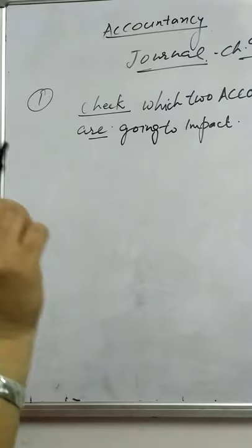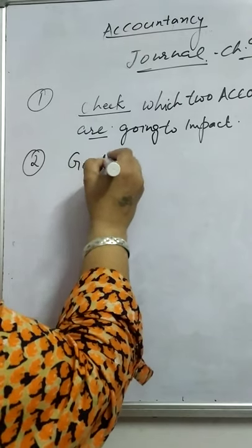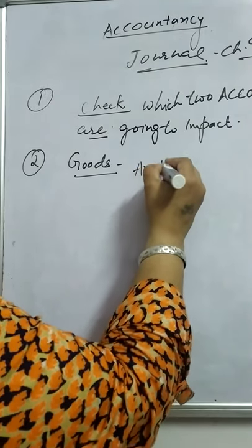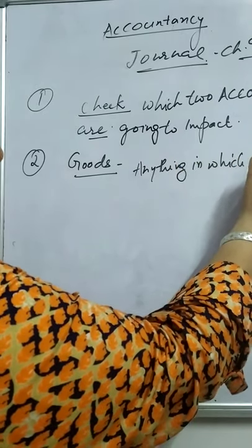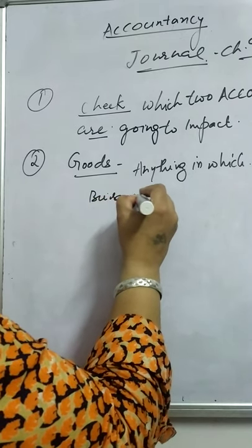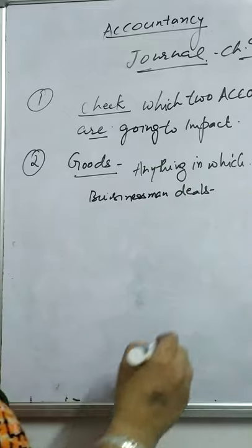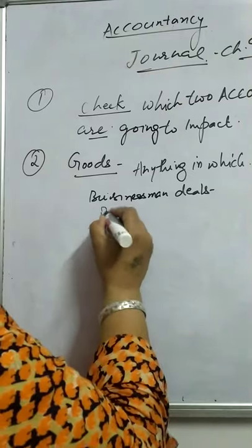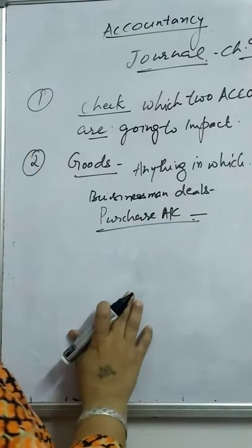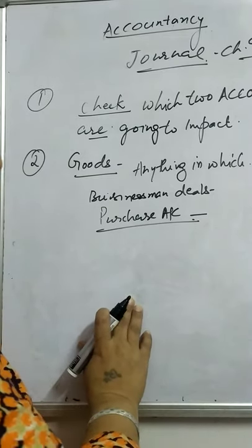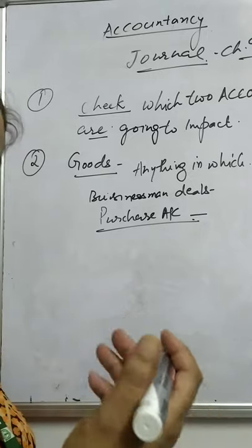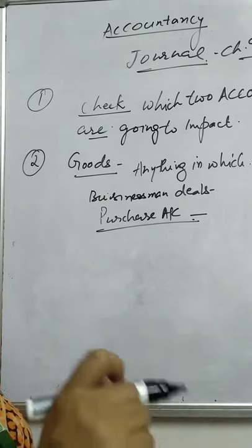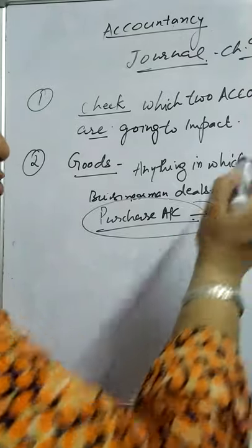While doing journal, we have to follow some rules — for example, regarding goods. Goods means anything in which a businessman deals. For example, a cloth merchant — cloth will be goods for him. If he purchases goods, then the purchase account will be used. But if he purchases furniture, it will not be recorded in the purchase account.